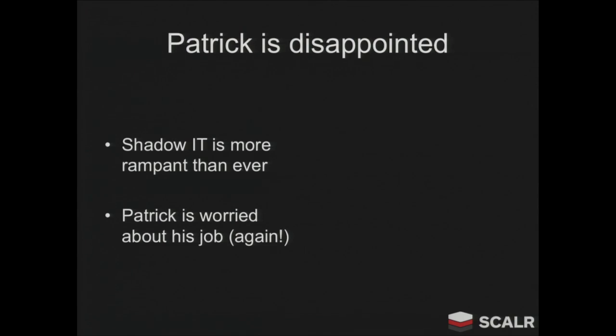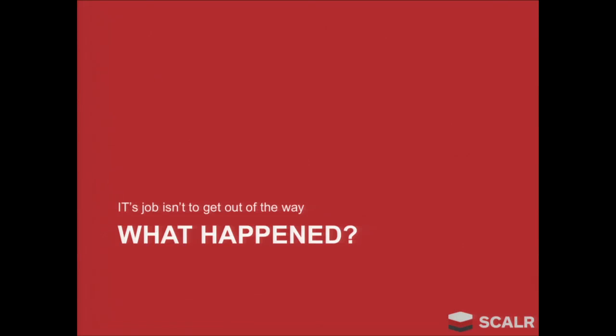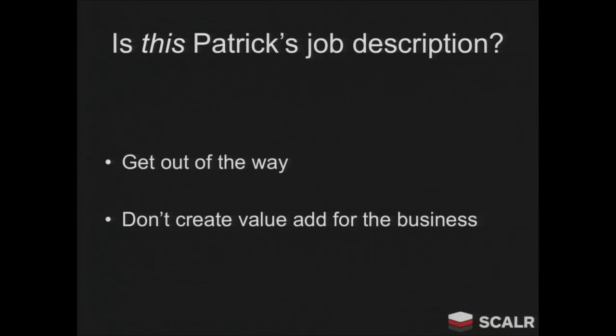Patrick is sad now. Shadow IT has just gotten worse. There are developers out there who aren't telling Patrick what they're doing. Unsecured infrastructure is being used for sensitive data, and Patrick is worried he's going to get fired again. So what happened? Why didn't OpenStack work? Is it IT's job to get out of the way? Is it IT's job to not create any value for their company? I don't think so. IT's job is to really give a secure environment for their engineers to work in, to make their engineers more productive and not bad for the company.